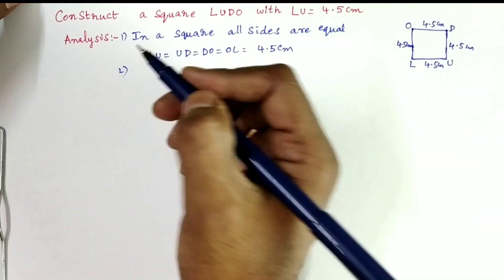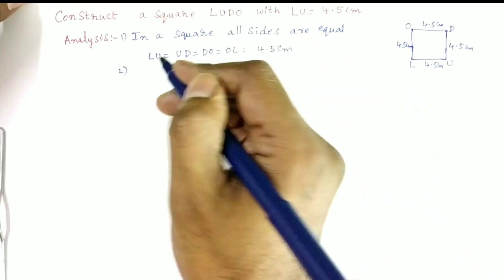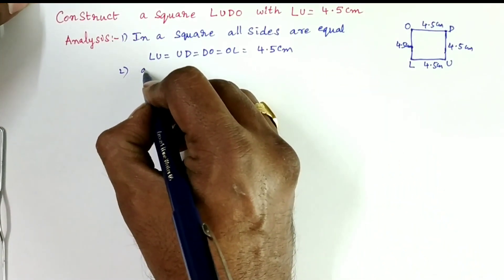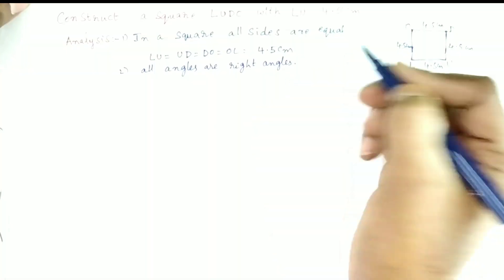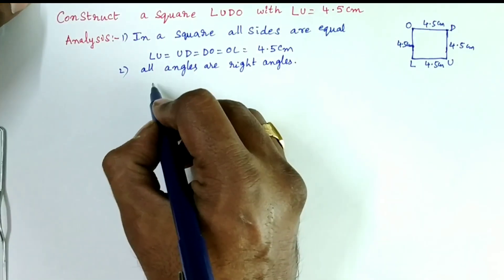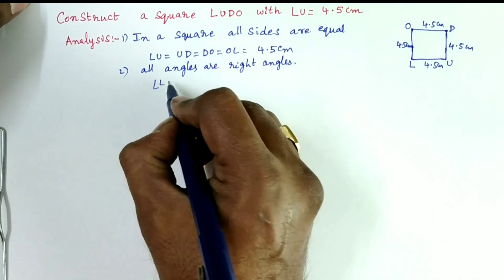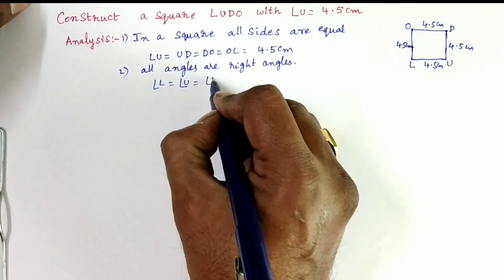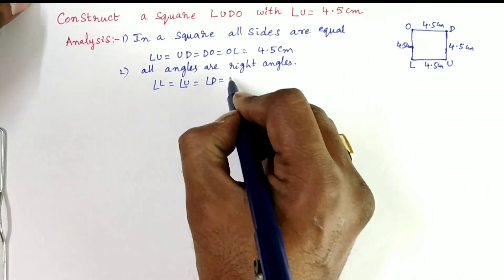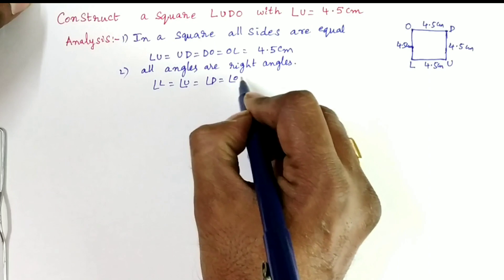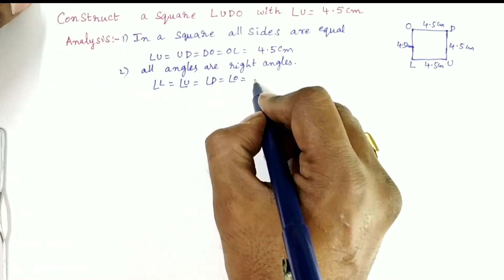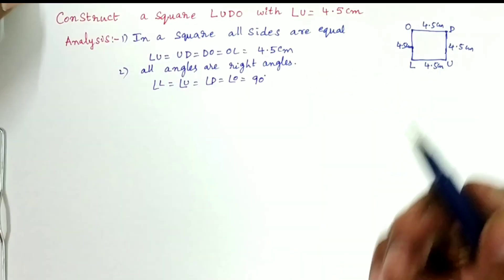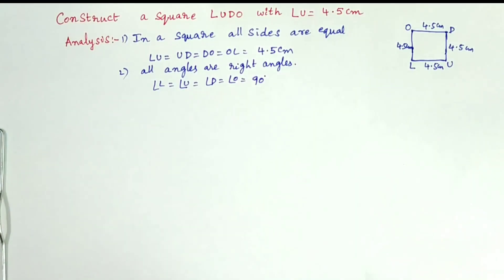The second property is: in a square, all angles are right angles. That means angle L = angle U = angle D = angle O = 90 degrees.